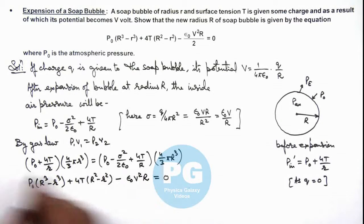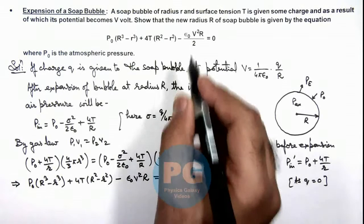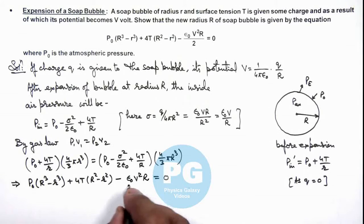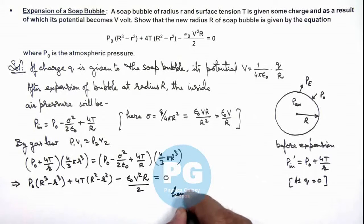Which is the equation we are required to evaluate. Here I have missed this 2 also which will also be there. You can simplify and verify this result that we are required to prove.